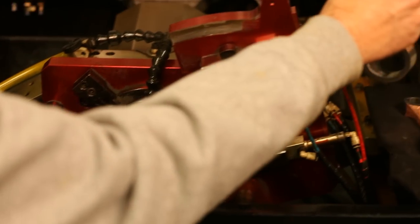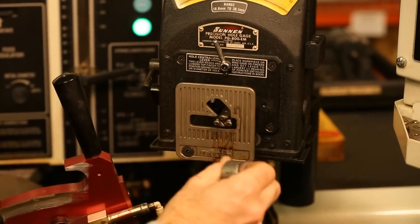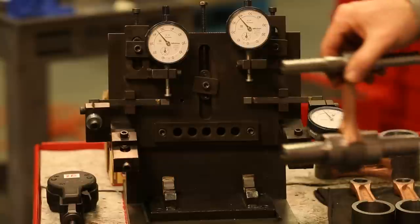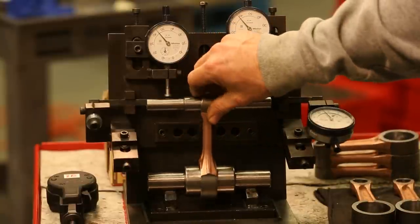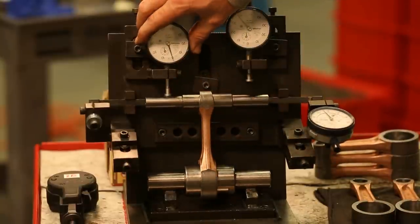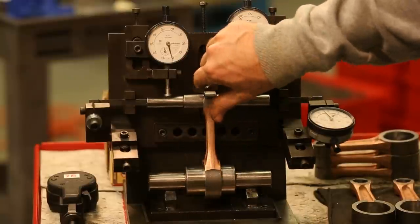Initial production run pieces are inspected in the quality control room on the CMM machine for proper dimensions. Then the hone operator hand inspects every piece for perpendicularity, parallelism, and bore size throughout his production run.